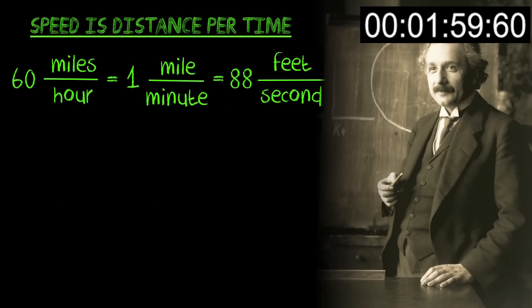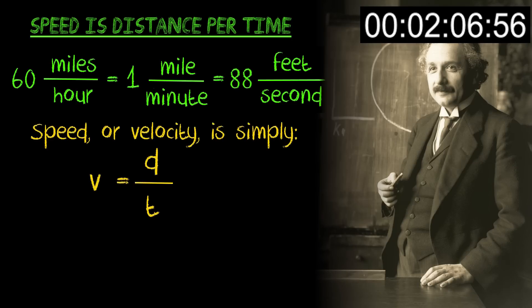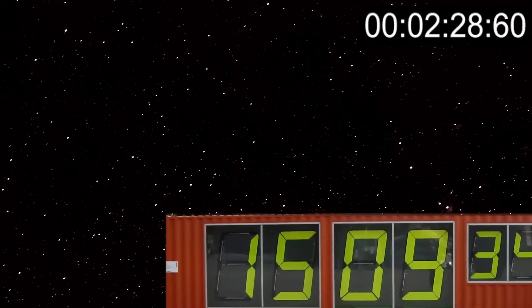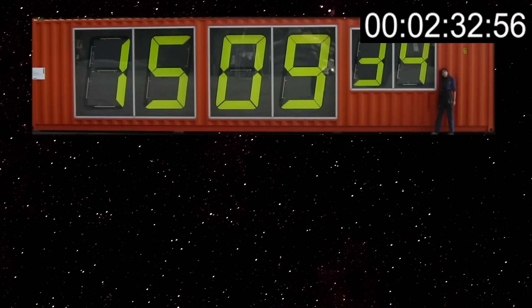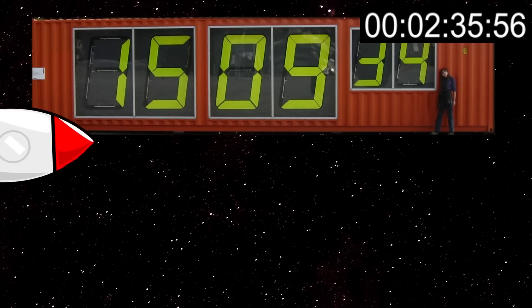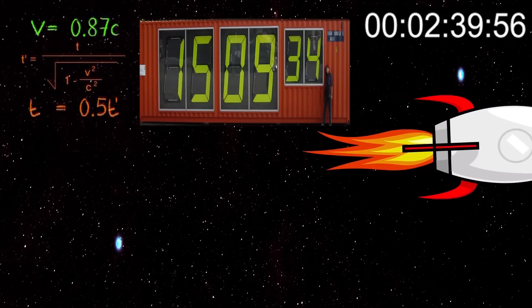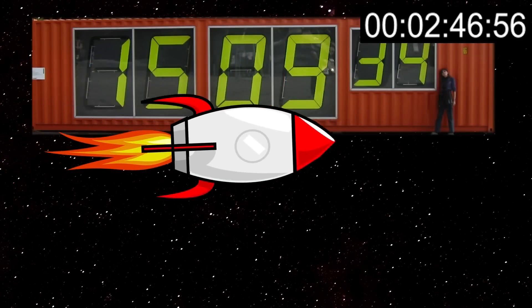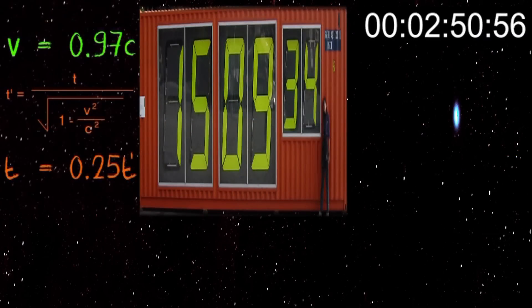Since speed is simply distance over time, if people going different speeds measure something and get its speed as the same, Einstein reasoned that these observers had to be measuring different distances and times. This effect wasn't just limited to light but to anything traveling fast — the closer to the speed of light, the more intense the effect, as governed by this equation. So if a guy on a giant digital space clock measures that clock as a mile long and checks his watch he'll see them running at the same speed. A guy flying by at 87% of the speed of light sees the clock only adding a second every other second and the clock only half a mile long. At 97% of light speed, the clock runs at a quarter as fast and measures only a quarter mile long.